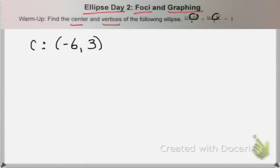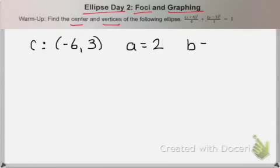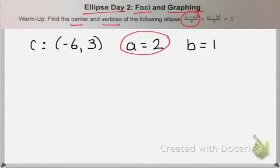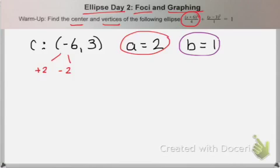We take the opposite of both of those numbers. From here I want to find my a and b values. I have to find a and b to find those. So since a squared is four, a is going to be two, and b is going to be one. Since my a value came from underneath my x, I'm going to add and subtract two from the x value of my center. And since my b value came from underneath my y, I'm going to add and subtract one from the y value of my center. And that will tell me my vertices.